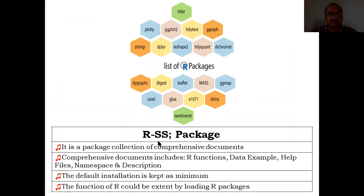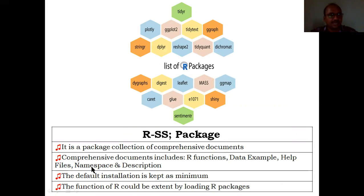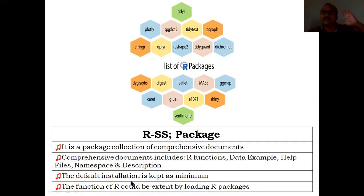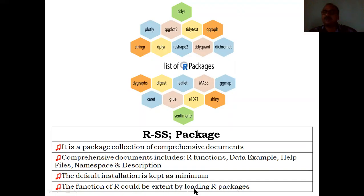R software packages are a collection of comprehensive documents. Examples of what these packages contain include: R functions, data examples, help profiles, namespace, and description files. These are the different types of comprehensive documents forming the list of R packages — you have to write these in the examination. Whenever you install R, minimum packages are automatically installed. If you want additional packages, you can load extra R packages, and everything is free.